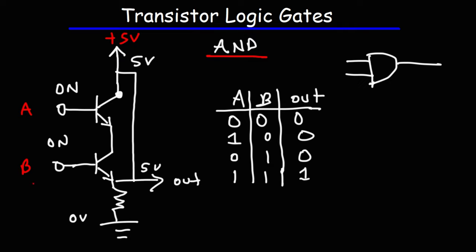So that concludes this video tutorial. Now you understand how you can make a logic gate using two transistors. You know how to build the AND, the NAND, the OR, and the NOR gate. Thanks for watching.